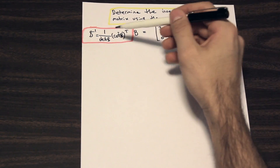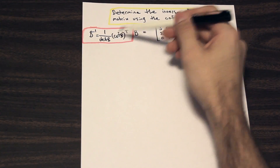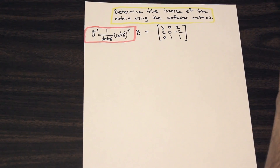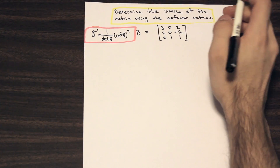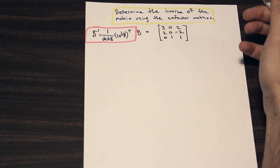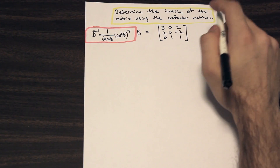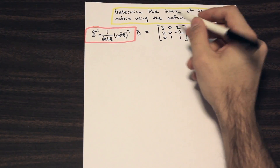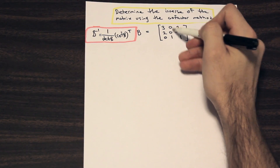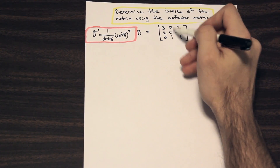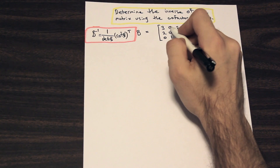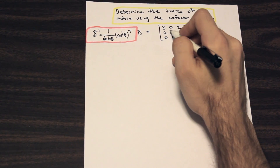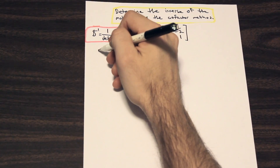The first thing we need to solve for is one of the variables within the formula. We have two different variables: the determinant of B and the cofactor of B. Let's start with the determinant. We're going to look at the second column here, because you always want to choose the column or row with the most zeros in it — it's going to be the easiest to calculate.